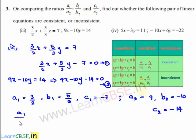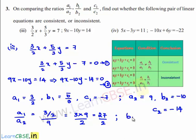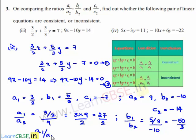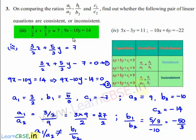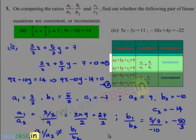Now, the value of a1/a2 is equal to (3/2) divided by 9, which equals 3/18, that is 1/6. And the value of b1/b2 is equal to (5/3) divided by minus 10, which is nothing but minus 50 by 3. So the value of a1/a2 is 1/6 and the value of b1/b2 is minus 50/3. Therefore, a1/a2 is not equal to b1/b2, and we can conclude that the given set of linear equations (3/2)x plus (5/3)y is equal to 7 and 9x minus 10y is equal to 14 are consistent.